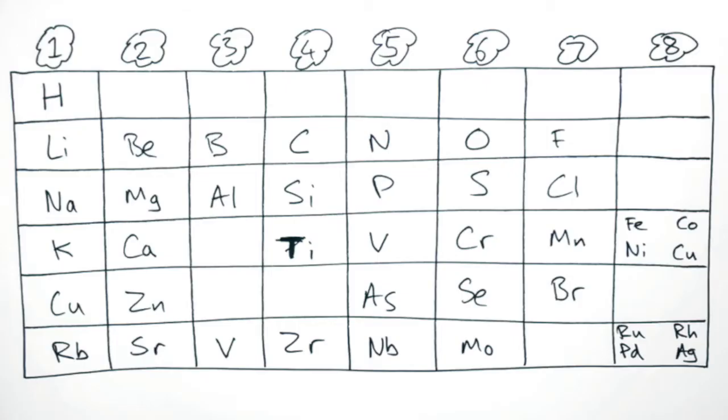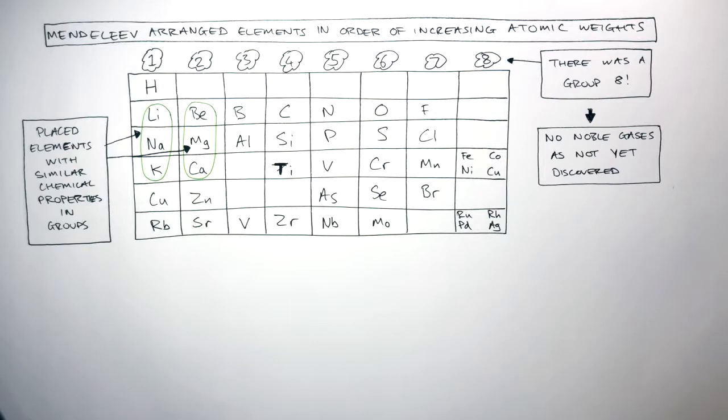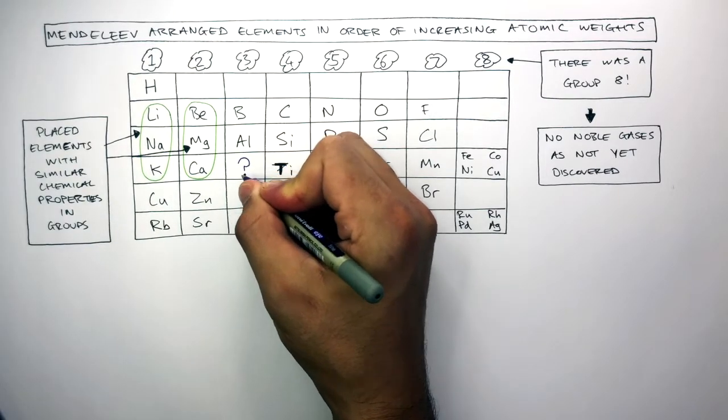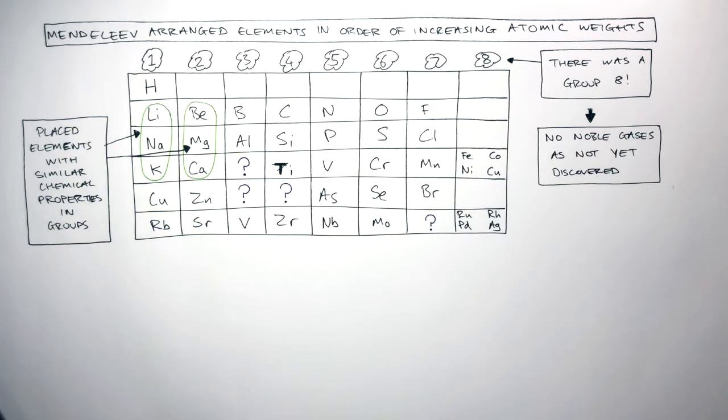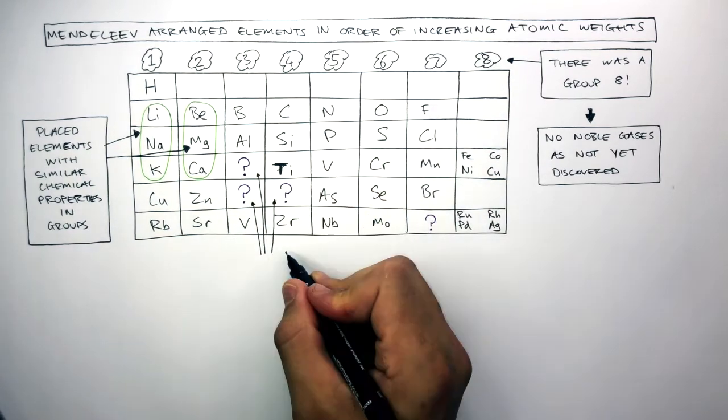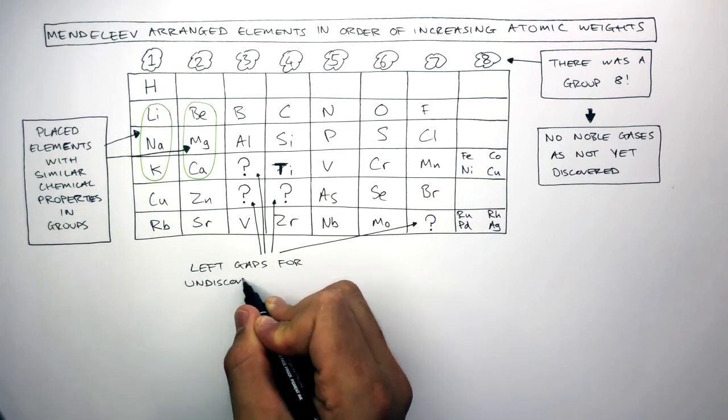Now what Mendeleev did that was so ahead of his time and absolutely incredible was that he left gaps for undiscovered elements. So here is a gap, here is a gap, here is a gap and here is another gap for elements that he predicted had not yet been discovered. So these question marks represent the elements that Mendeleev predicted would be discovered. So Mendeleev left gaps for undiscovered elements.